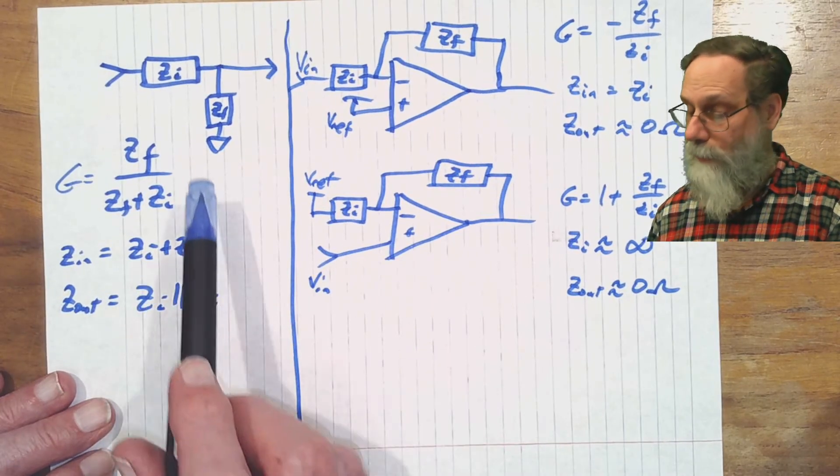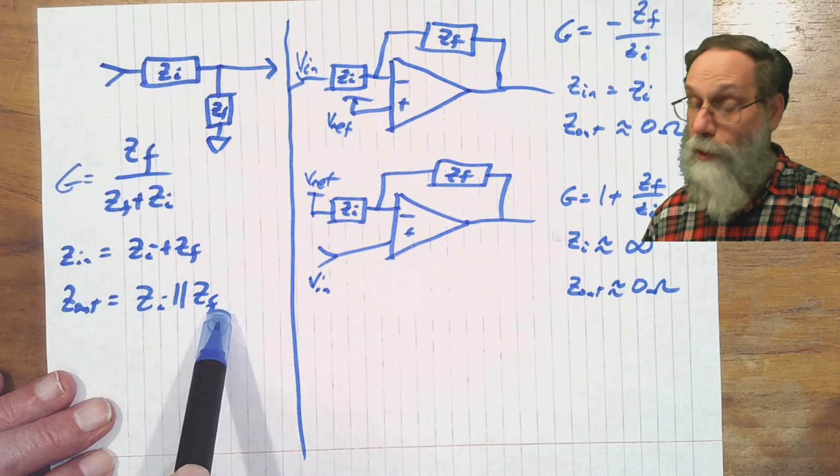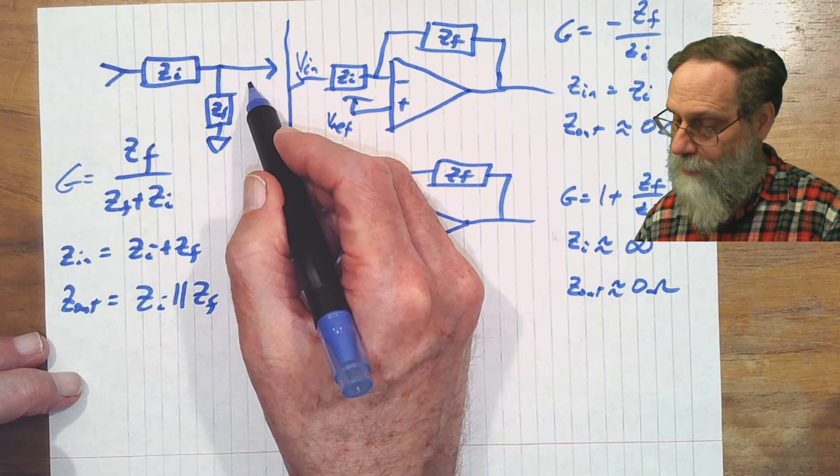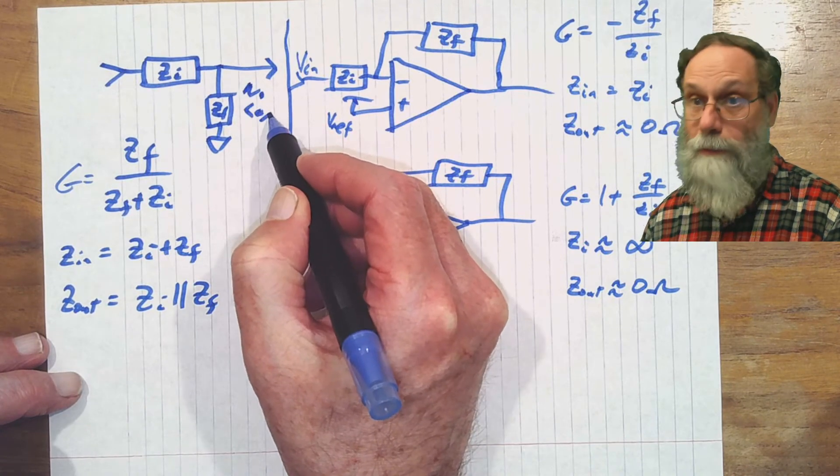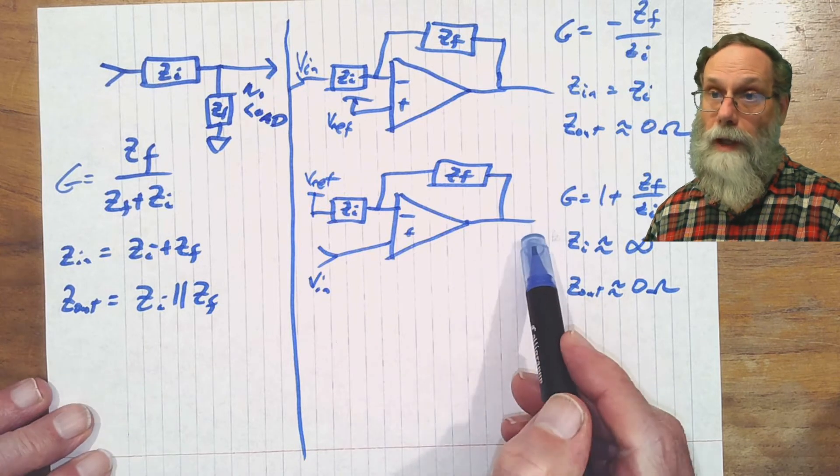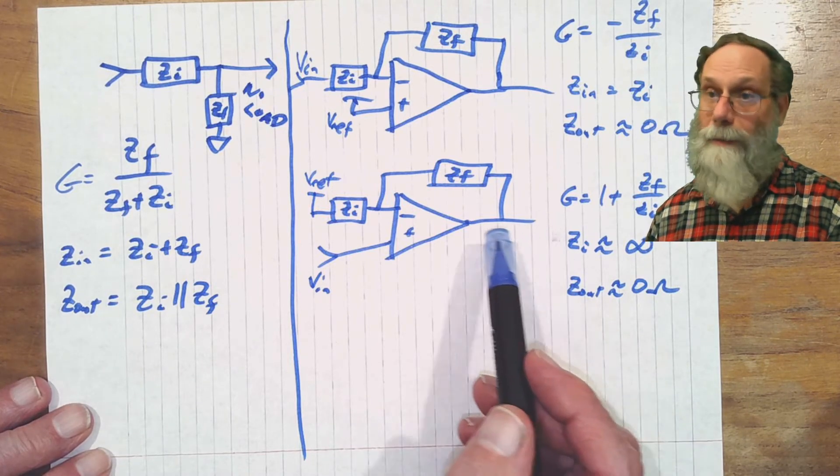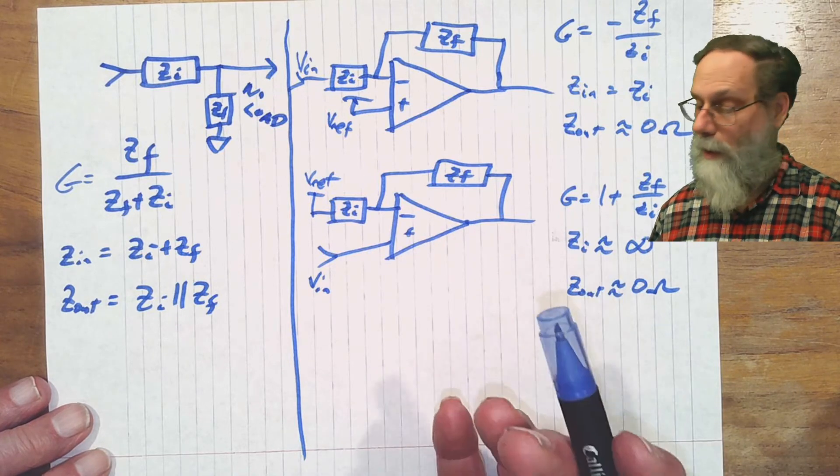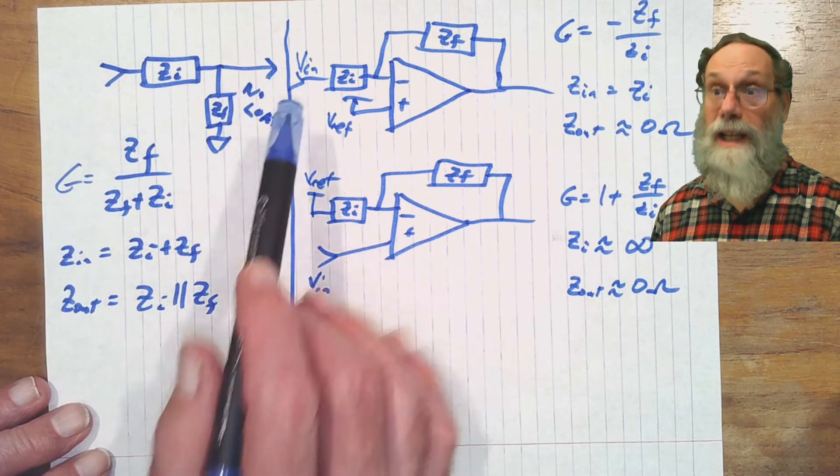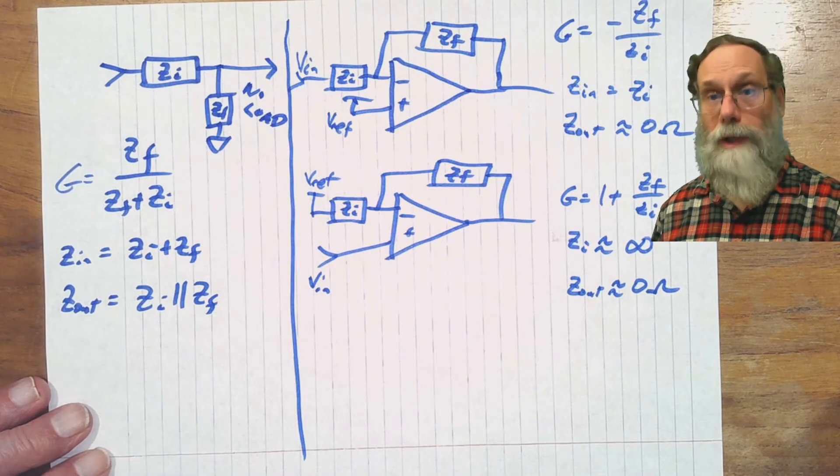And unlike the passive filter, where all these things were based on the assumption of no load, so that was a strong assumption here, we didn't put anything there. Here we can put a load on this, and it's not going to affect the filter as long as the op amp is capable of delivering the current that the load needs. Here you put anything after this changes the filter, and that makes designing passive filters much trickier.